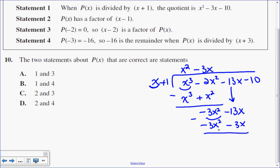And I subtract. So negative 3x squared take away negative 3x squared is 0. Negative 13x take away negative 3x is negative 10x, and I bring my last one down.